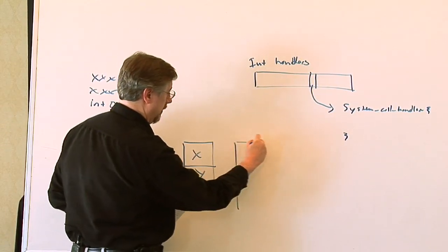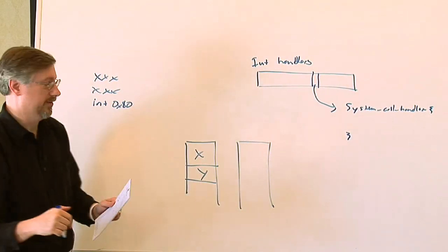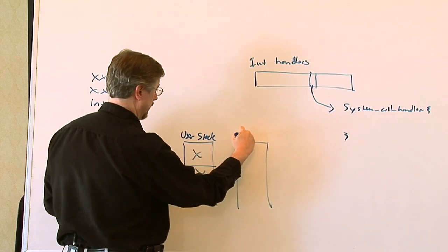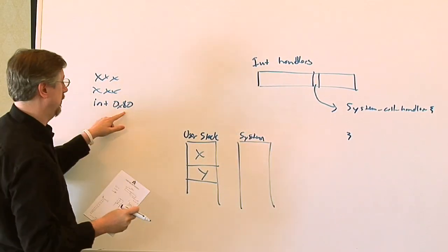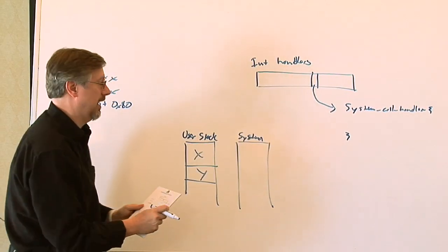Then it will actually switch stacks with the way the interrupt handler is set up here. So you have your user stack here and your system stack here. At the point when it makes this interrupt trap call, it jumps to this routine and now it's using this stack.